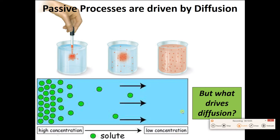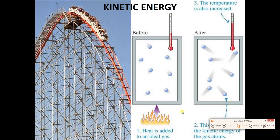Why are molecules always moving? It's all about heat in the system. Unless we're at absolute zero, we have heat, and if we have heat we have kinetic energy — energy of motion. Heat something up, diffusion is going to go faster.